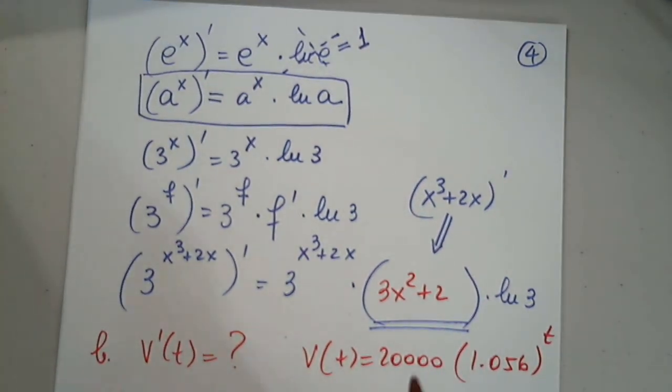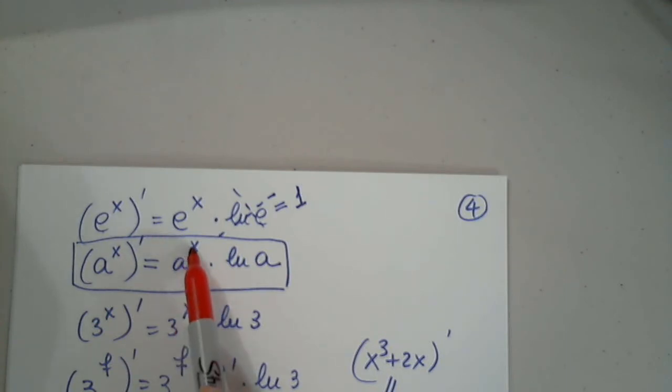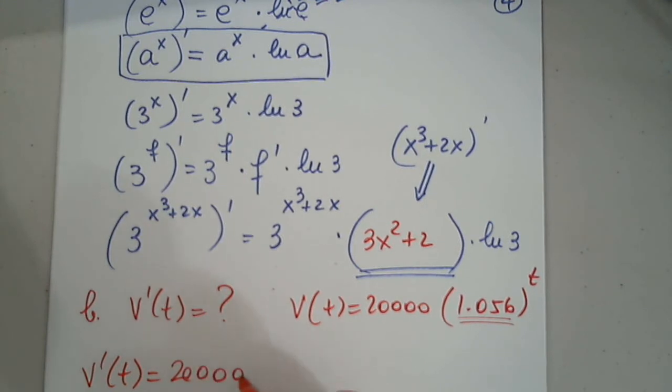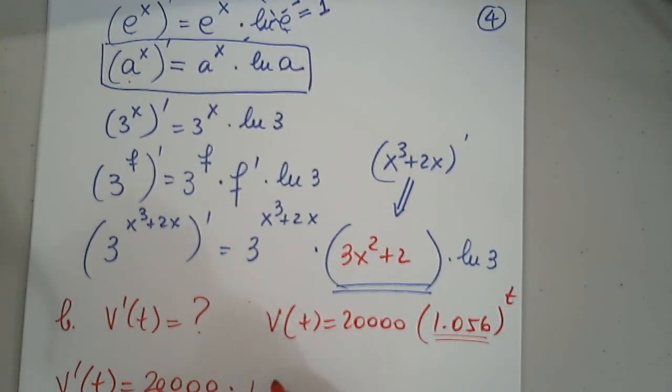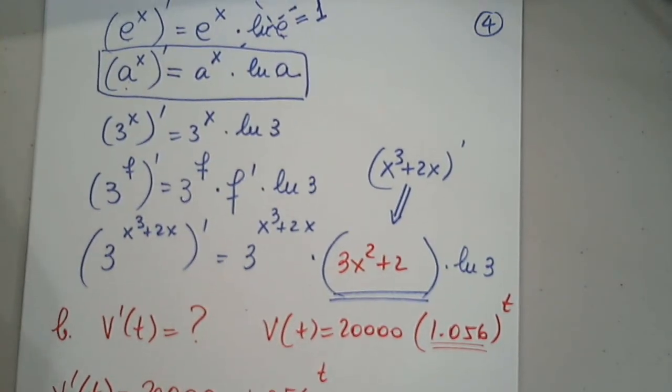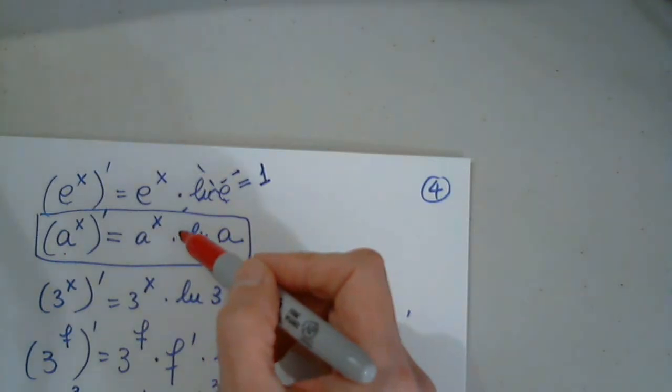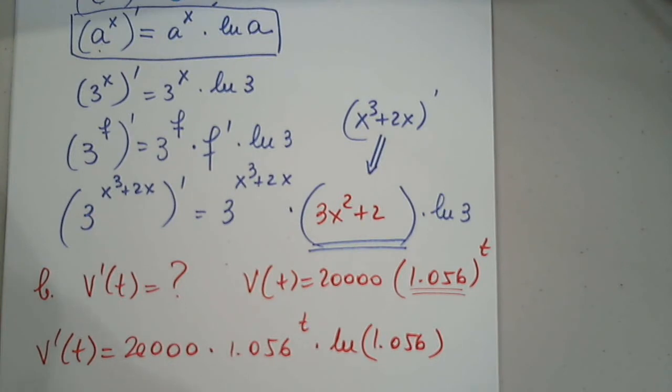I'm going to copy it here so I don't have to go back to that page. So V(t) equals 20,000 multiplied by 1.056 to the t. Based on the fact that this base is not e, but it's any other number, I will have to write 1.056^t times natural log of 1.056. So V prime is 20,000, which is a constant, multiplied by 1.056^t, multiplied by - the t is just t, there is no need to write times t prime because that's 1 - and multiplied by natural log of 1.056.